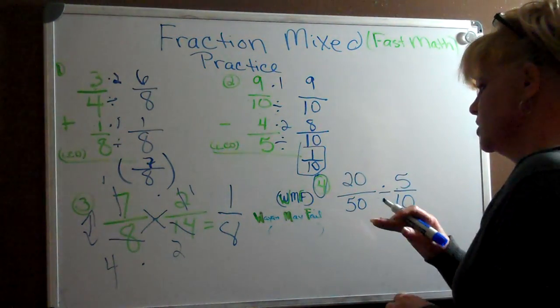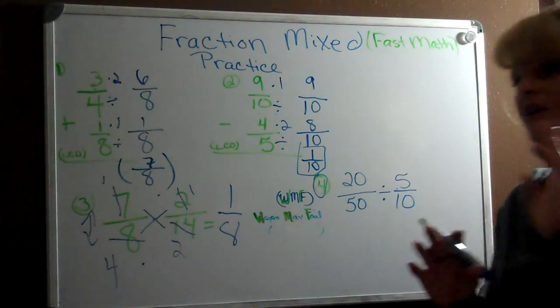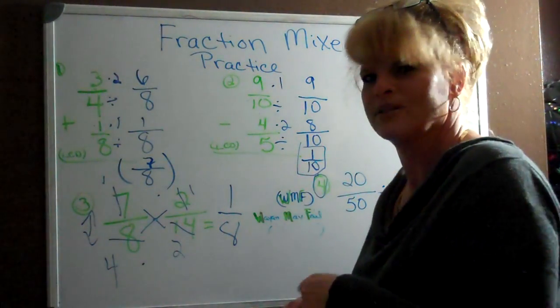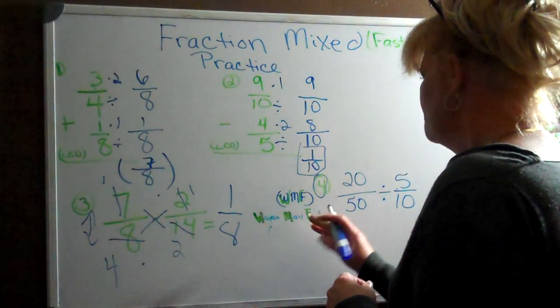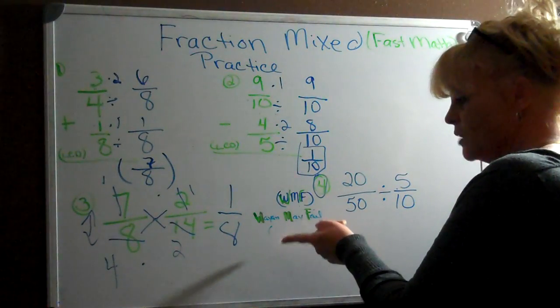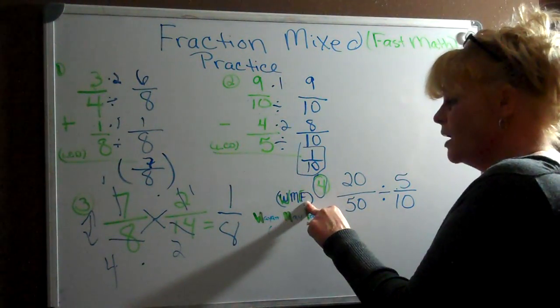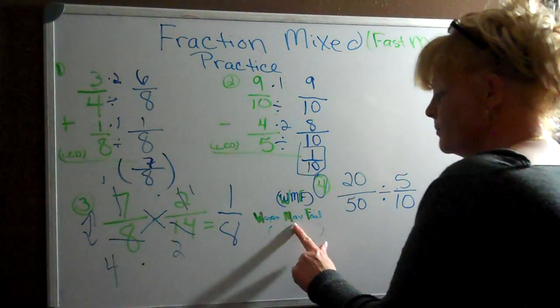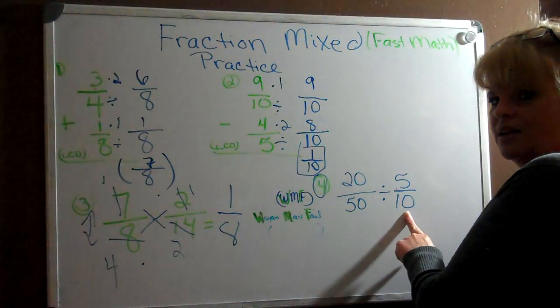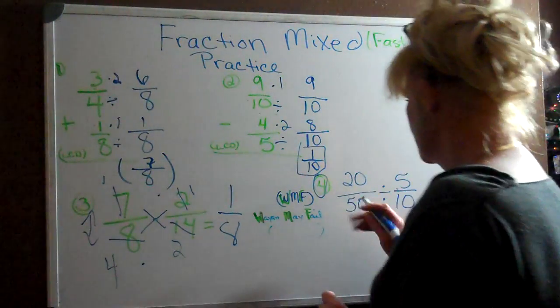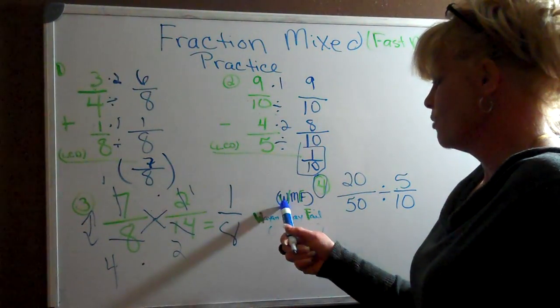And then we have division left. Division is what everybody else has trouble with. My son's trying to talk to me. Sorry guys, I'm not crazy. Anyways, I come up with a solution here that I want you to write down, and that's WMF. This will remind you that Wayne may fail if he does not flip the second number. So let's go ahead, and what we're going to do is the W stands for write it out again.